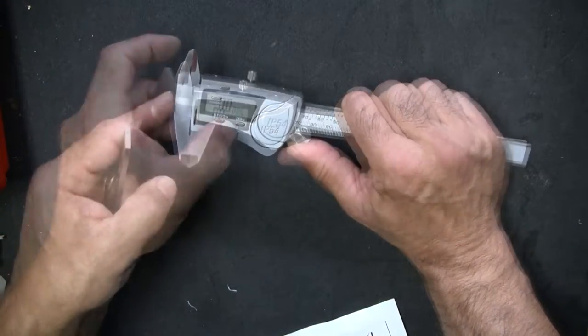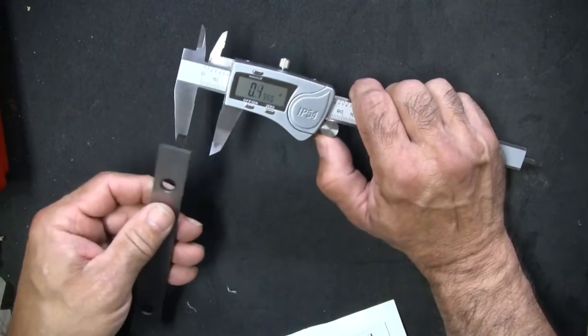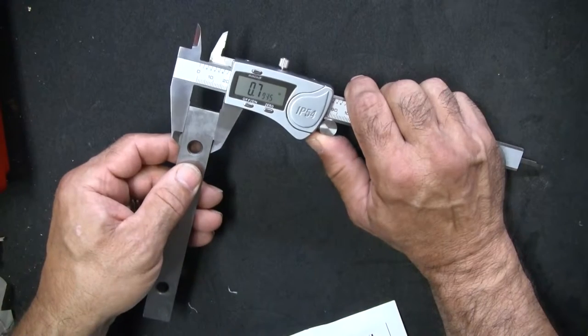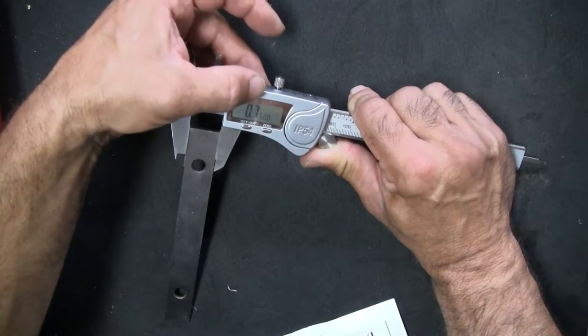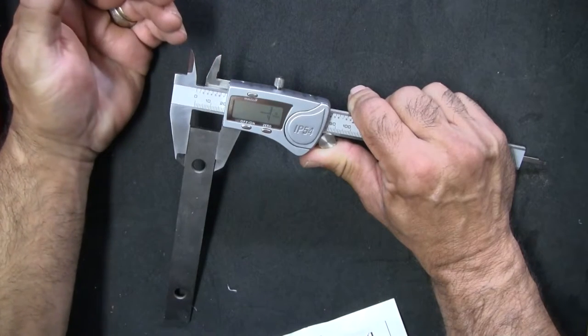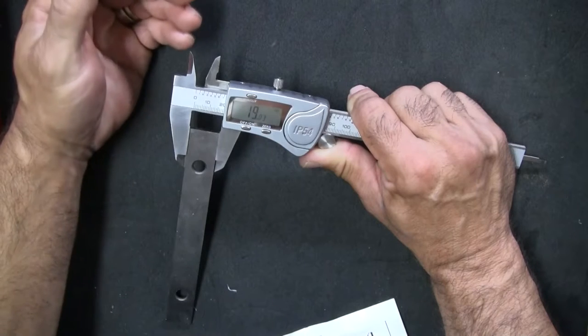Actually let's zero this first because what I have found is that it pays to frequently zero this. It does drift off a little bit with a lot of use. It's got point seven five. So here's the neat thing, I can switch it to fractions of an inch. Point seven five is three-quarters of an inch.